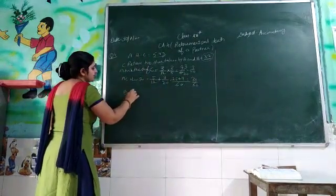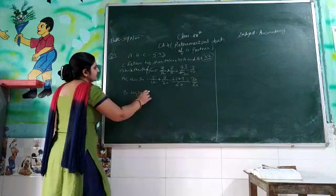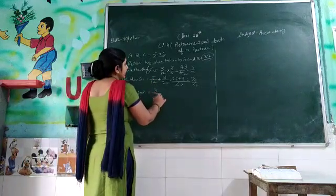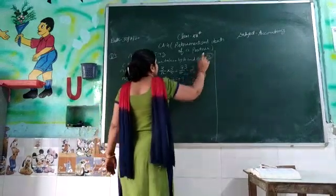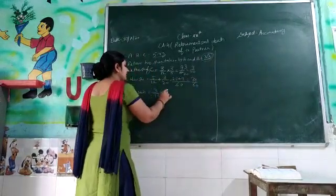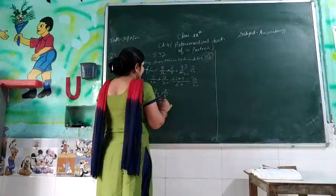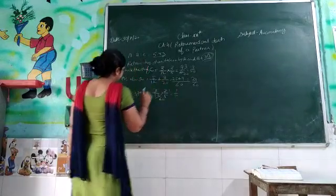Now B's gain. B is how much? C's share is 3 by 12 multiply by 2 by 5. 2 by 5, 2 times 1 is 2, 2 times 6 is 12, 3 times 6, which is 6 by 60.